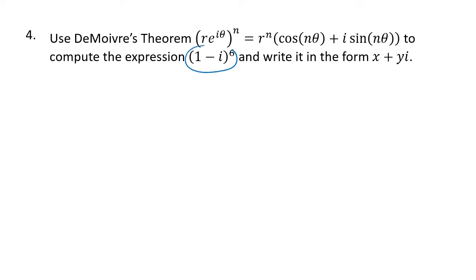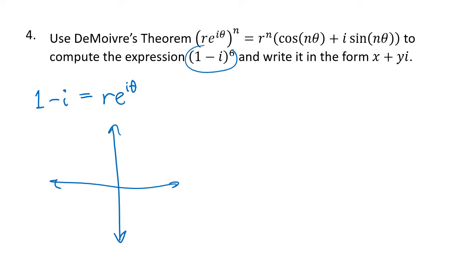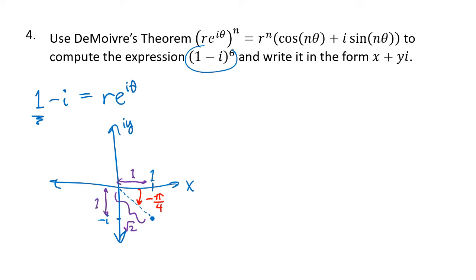We want to compute (1 - i)⁶. First, we write 1 - i in the form r·e^(iθ). Plotting on the complex plane, the real part is 1 and the imaginary part is -1, giving a point at (1, -i). The angle is -45° = -π/4 radians. Using the Pythagorean theorem, the distance from the origin is √(1² + 1²) = √2. So 1 - i = √2 · e^(-iπ/4).